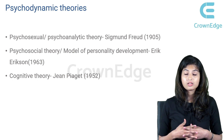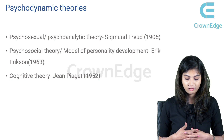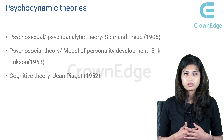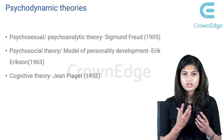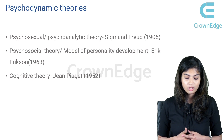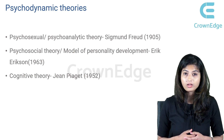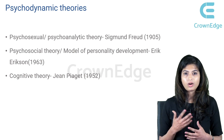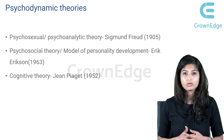The second theory is the psychosocial theory, or the model of personality development, by Erik Erikson in 1963. This theory focuses mainly on the social interaction of the individual with the environment — how psychology changes according to society. The third theory in psychodynamic theories is the cognitive theory by Jean Piaget in 1952, which tries to understand how the mind functions.